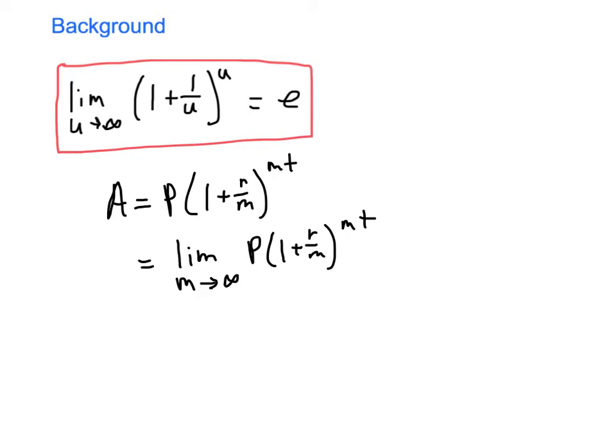Now what we can do is we can manipulate this expression a little bit to make it a little more favorable to us. First of all, this is a constant multiple P, so I'm going to pull that out in front. And you'll notice that this variable m is the thing that's going to infinity, so it's the only thing that we have to worry about in terms of limits.